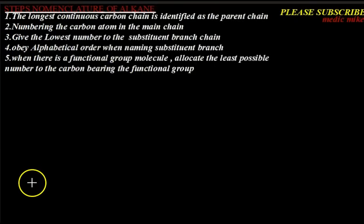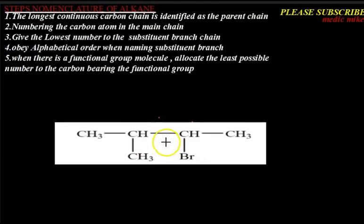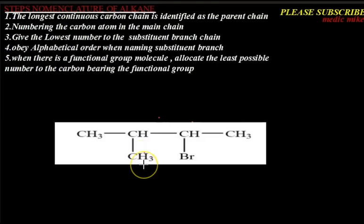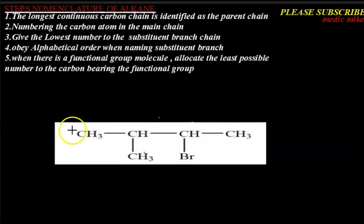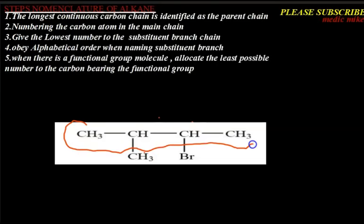We have an organic compound and we are asked to give its IUPAC name. First, we identify the longest continuous carbon chain. Going one direction gives only three carbon atoms — that would be wrong. The correct longest chain gives us four carbon atoms: one, two, three, four. So our longest parent chain is four, which is called butane.